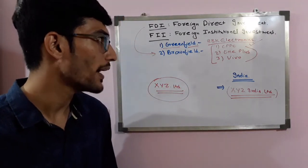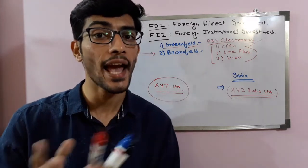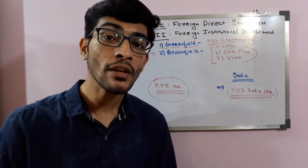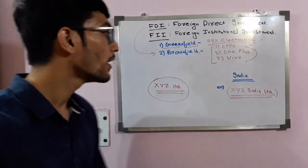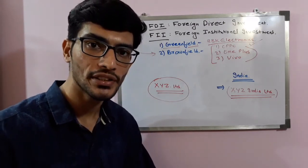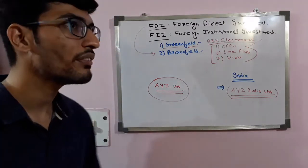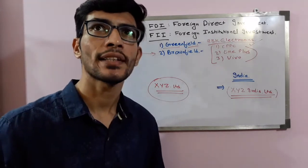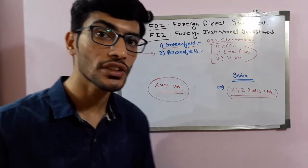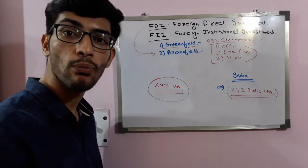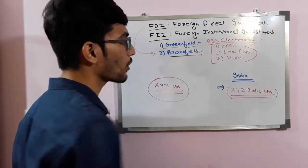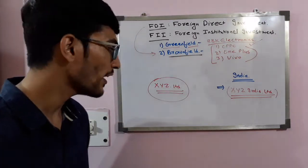Now coming to Brownfield Investment — when a company purchases an existing firm in order to begin new production. It's simple: when one company purchases another company. For example, a few years back Microsoft purchased Nokia. So this is the perfect example of Brownfield Investment.